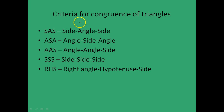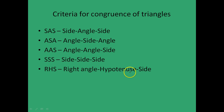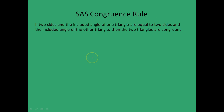These are the criteria for congruence of triangles. The first one is called SAS or side-angle-side, the second one is called ASA — angle-side-angle, the third one is called AAS which is angle-angle-side, the fourth one is called SSS — side-side-side, and the fifth and final one is called RHS which is right-angle-hypotenuse-side. We will look at each of the five in detail as we move forward.